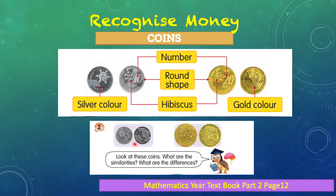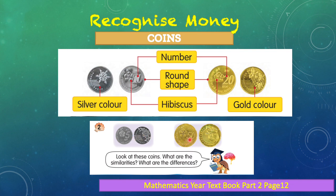Look at this coin — what are the similarities, what are the differences between the 5 cent coin and the 50 cent coin? The similarity is that both have a hibiscus flower on the front surface, and both are round in shape. The differences: the 5 cent coin is smaller than the 50 cent coin in size. The color is also different — the 5 cent coin is silver and the 50 cent coin is gold.